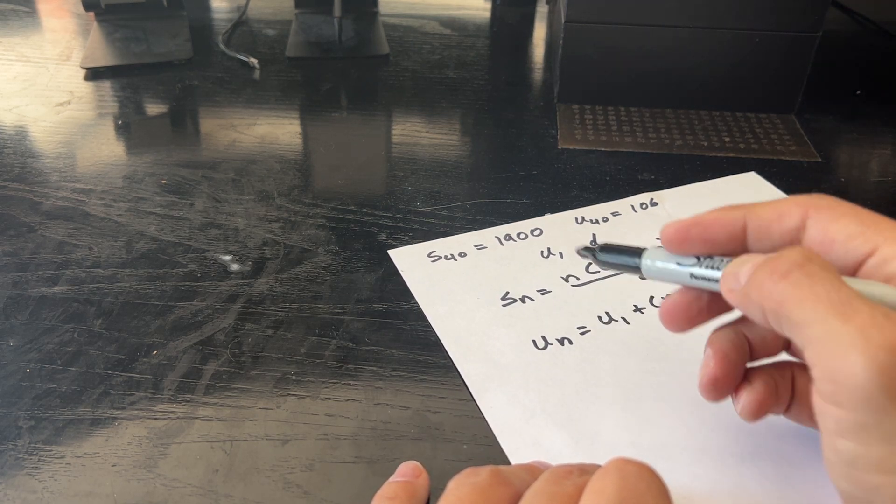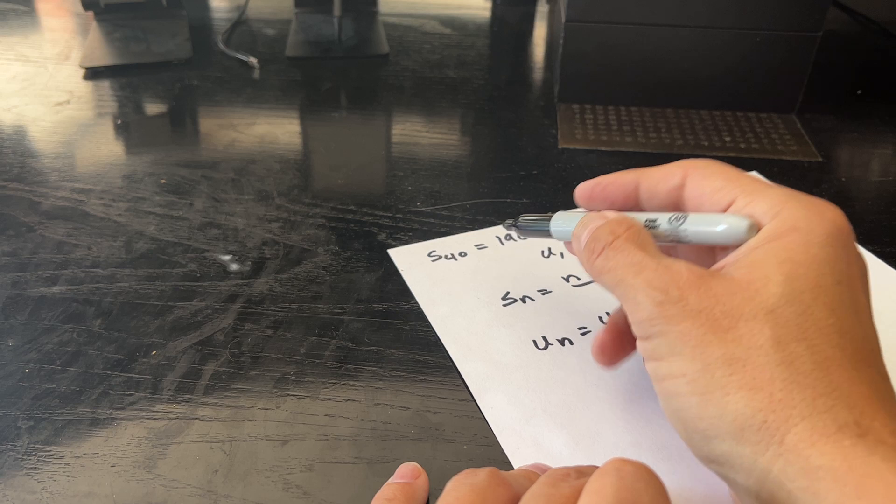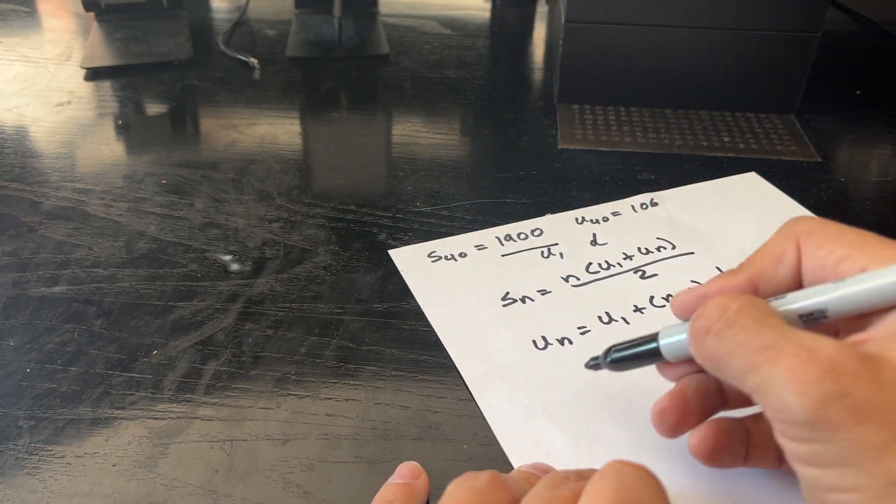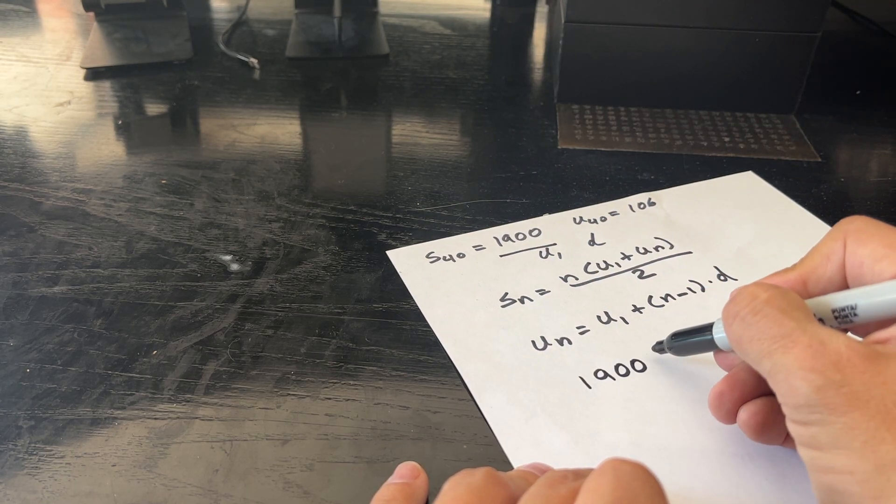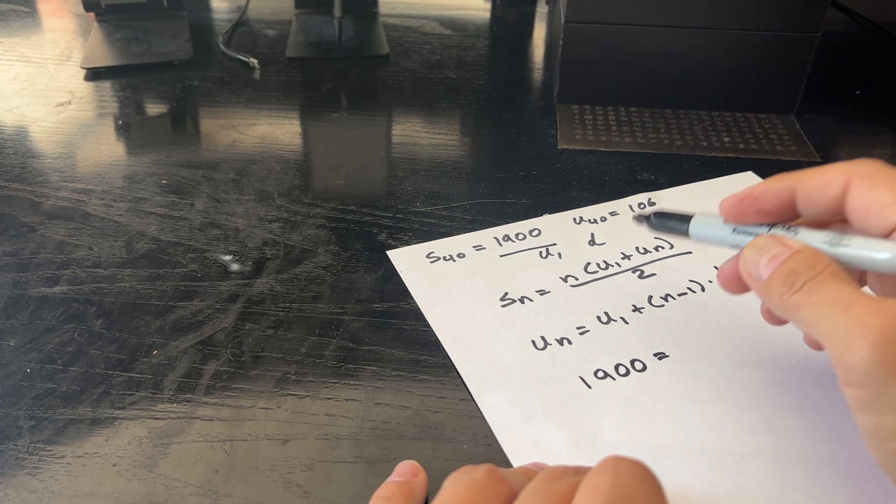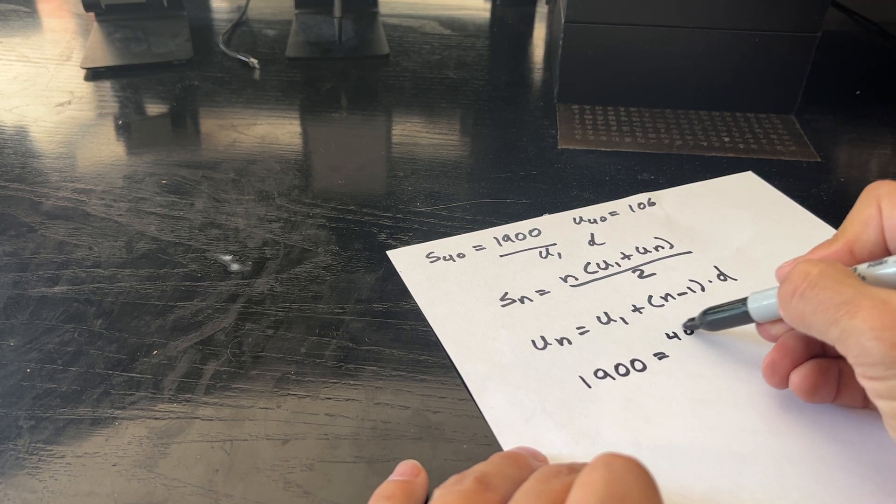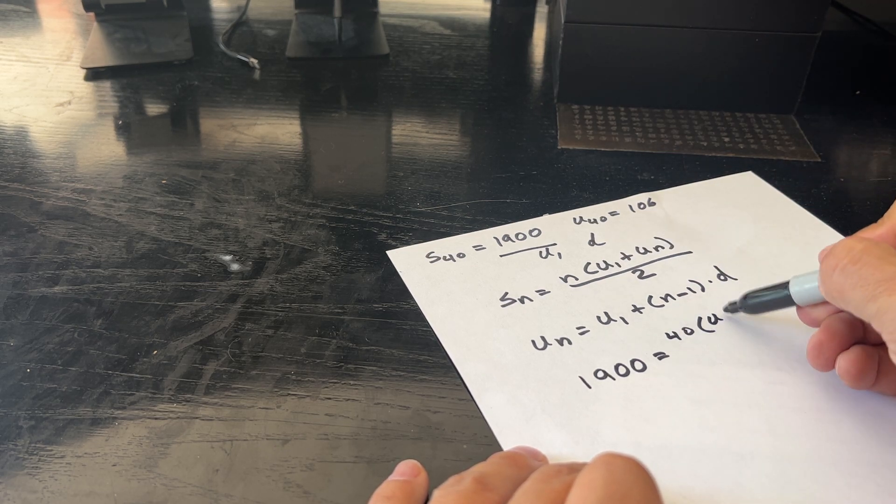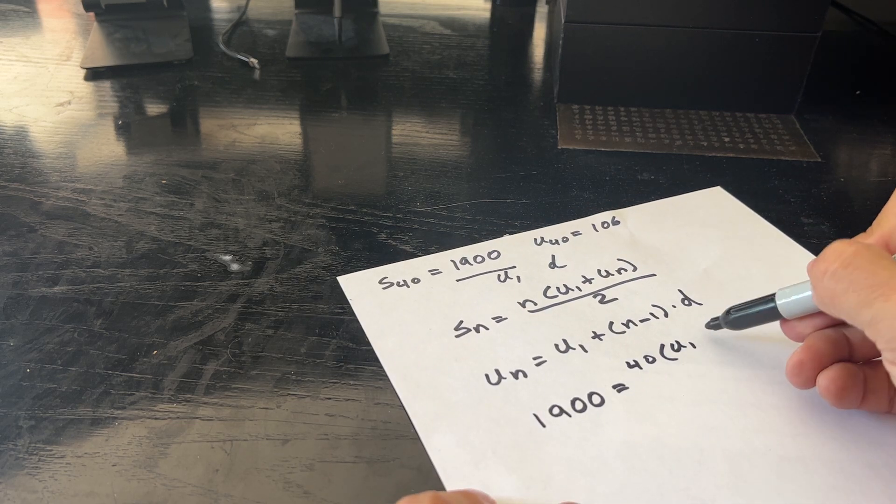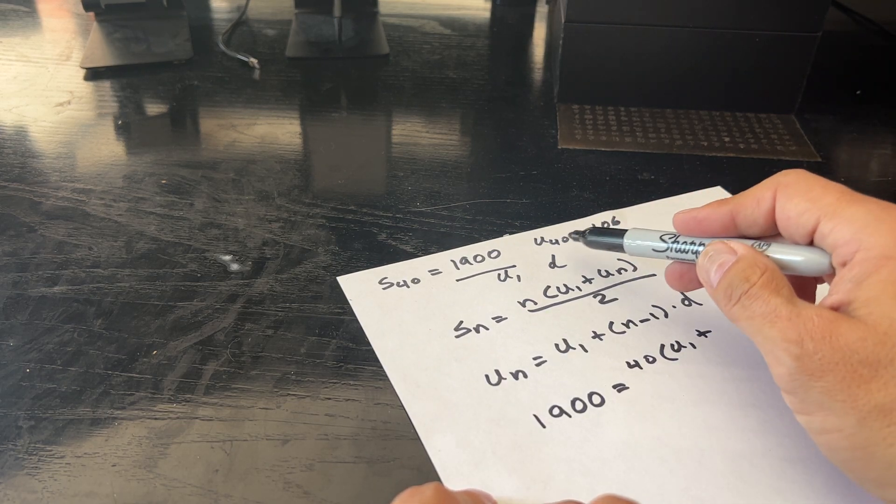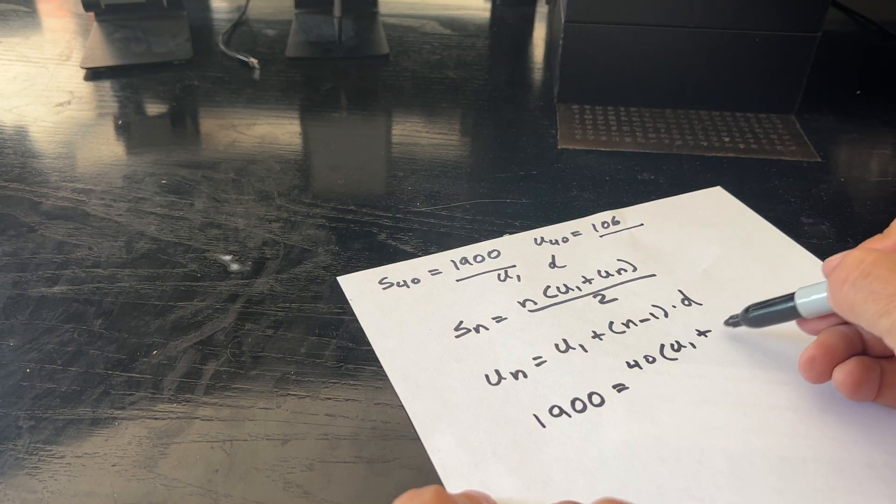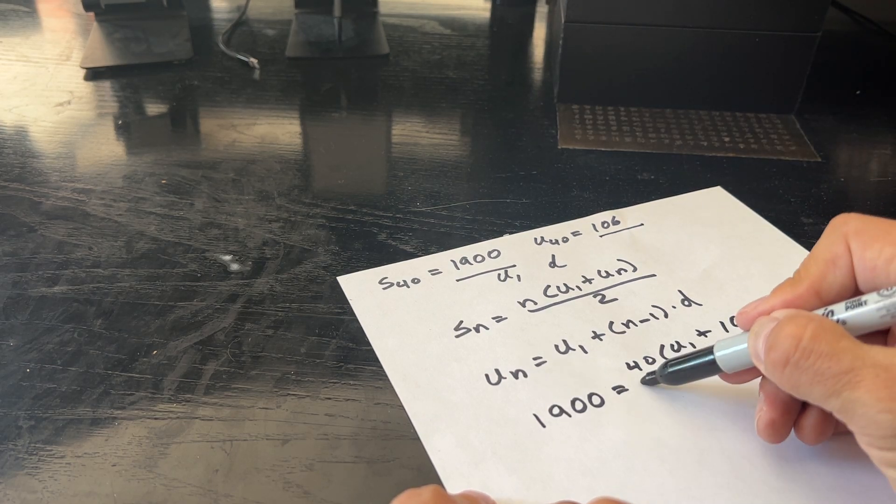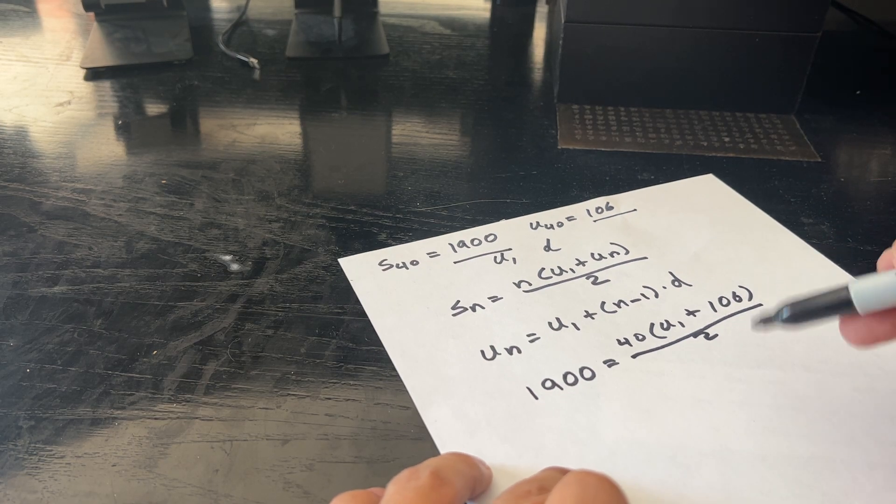So for the first one, Sn, in this case the value that we have here, Sn is 40, we're going to use 1,900. So 1,900 equals N, which is 40, times U1, which is what we're looking for, plus Un, which N is 40. So U40, we have 106 plus 106 over 2.